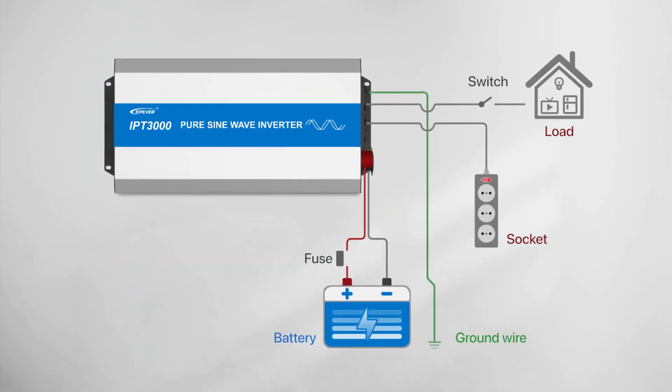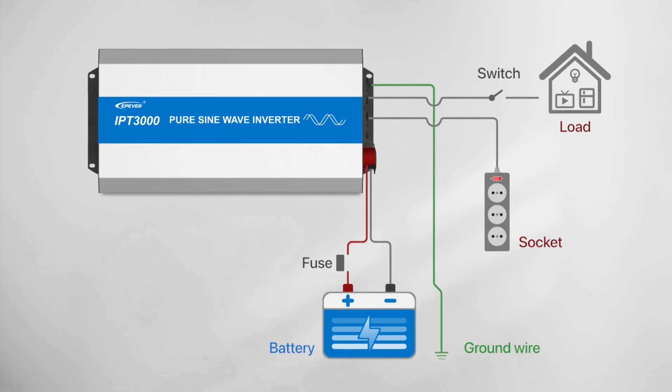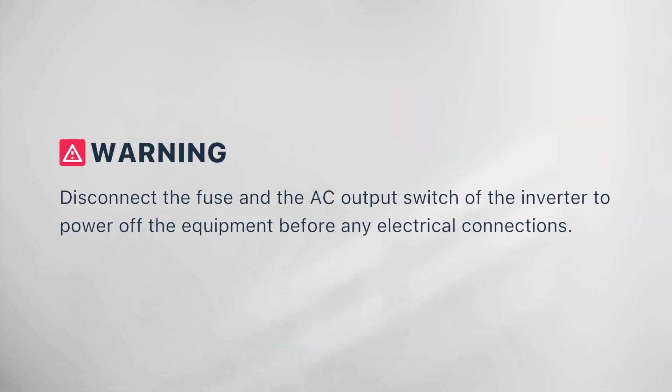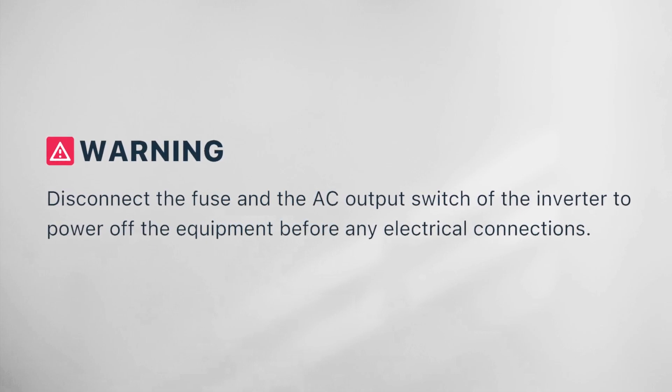Now the IPT off-grid inverter system is ready to be used. Please note again, disconnect the fuse and the AC output switch of the inverter to power off the equipment before any electrical connections.